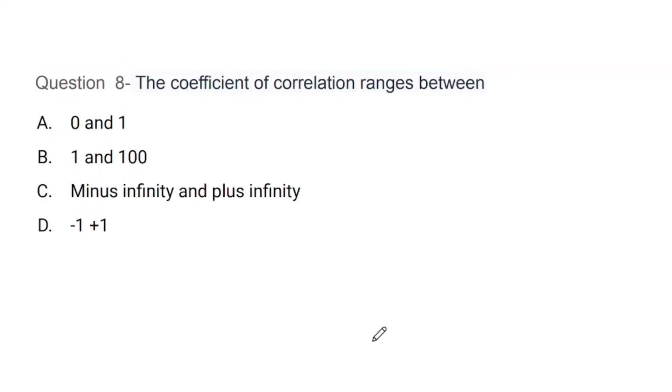Question number 8: The coefficient of correlation ranges between what - 0 and 1, 1 and 100, minus infinity and plus infinity, or minus 1 and plus 1? Very important question. The correct answer is D. Always remember, the range of coefficient of correlation is always between minus 1 to plus 1.